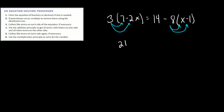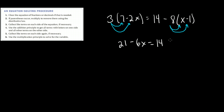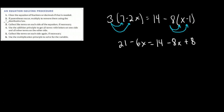So the way that works is: 3 times 7 is 21, positive times a negative is negative 6x, equal to 14 — that just comes straight down. Negative times a positive is minus 8x, negative times a negative is a positive 8 — 8 times 1. So that's step 2.